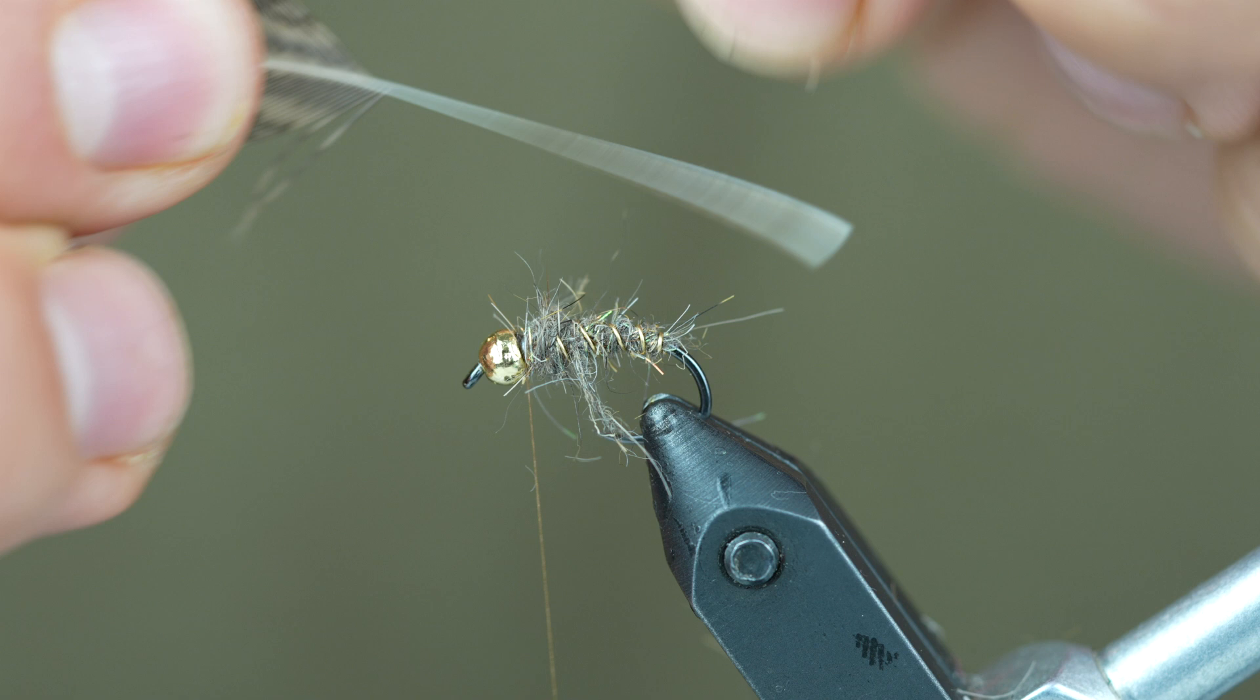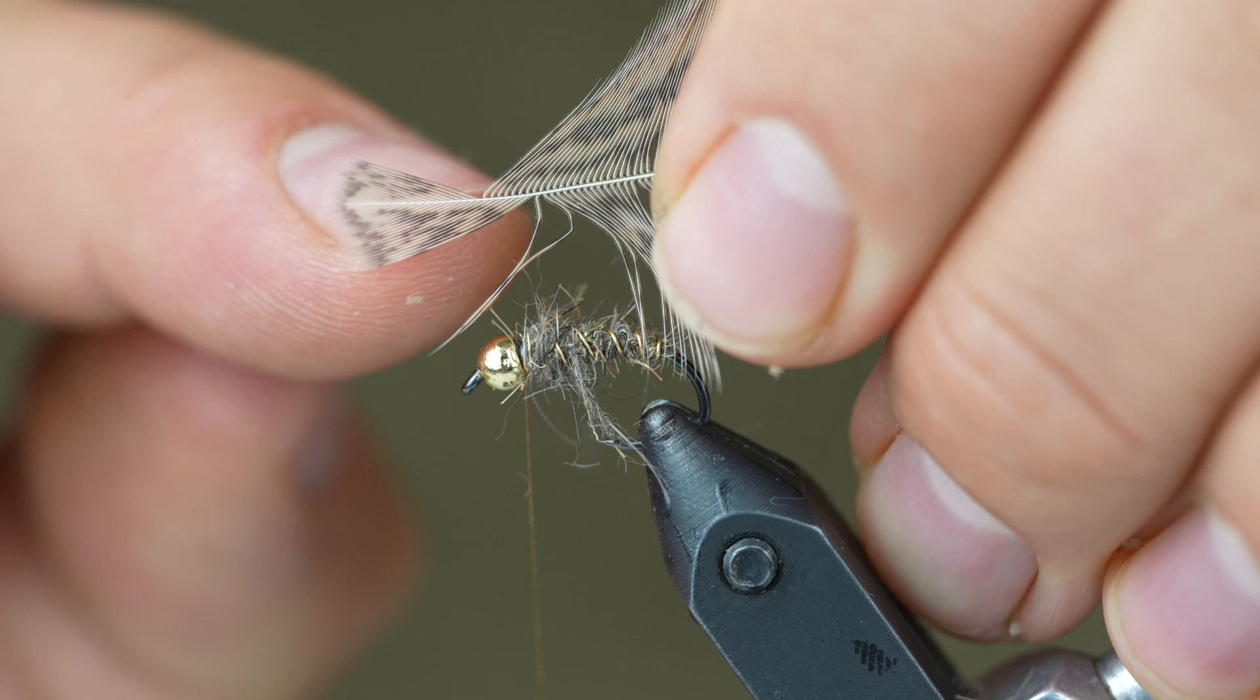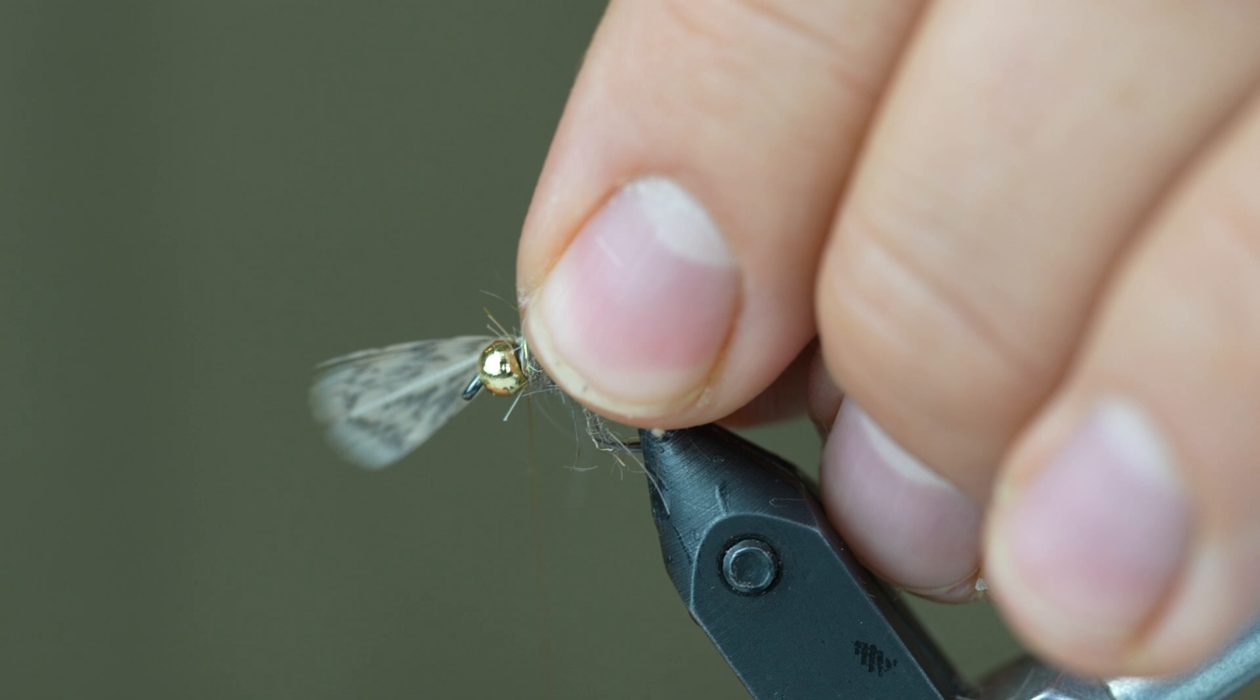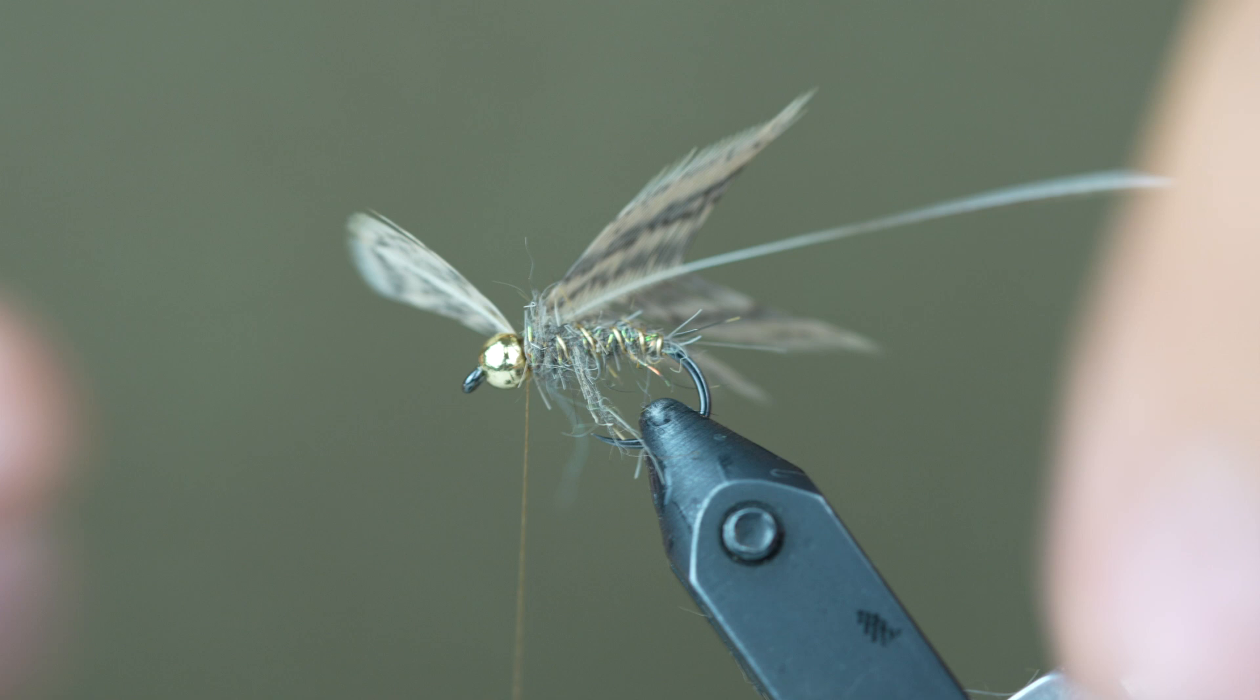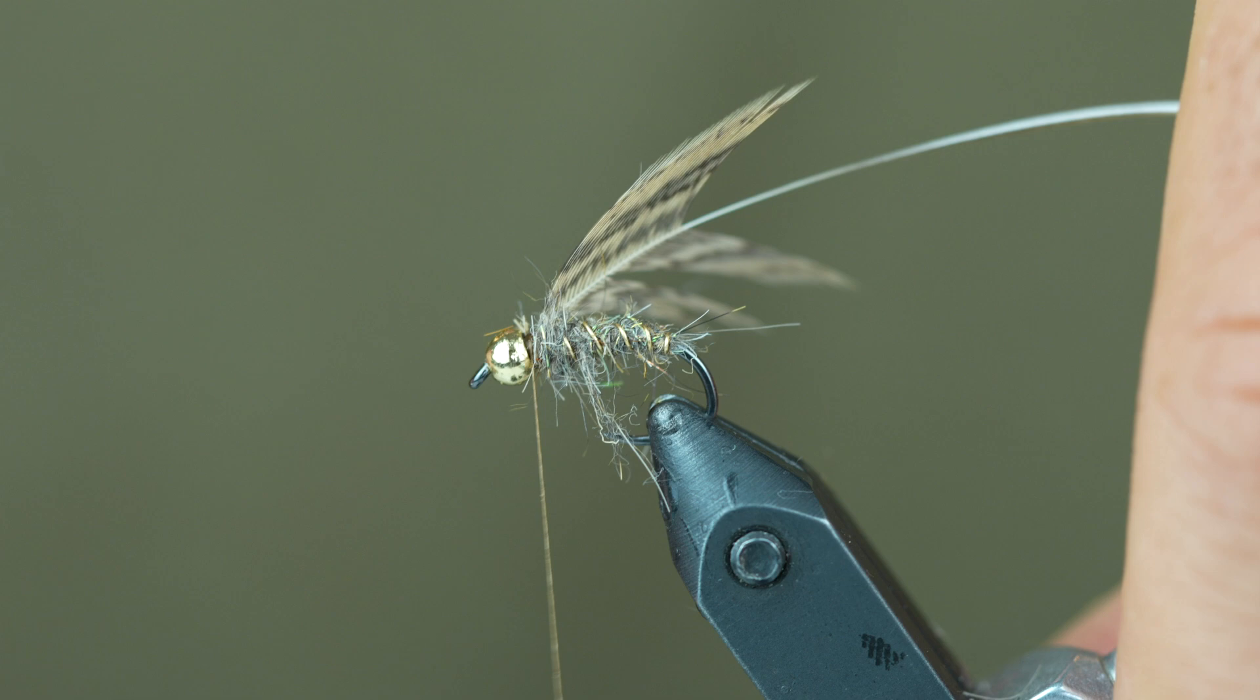Then we're going to strip these fibers back, and you're going to look for the spot where the fibers start to kind of decrease in length. So right about there you're starting to see those fibers really fall off in length compared to the rest of the feather. So we'll go ahead and tie in right there with the shiny side or the upper side of the feather facing toward us and the dull side against the hook shank. Trim off the excess.